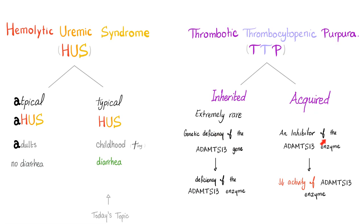In the acquired form, there is no deficiency of the enzyme itself, but there is an inhibitor — usually an IgG inhibitor — of the ADAMTS13 enzyme, leading to decreased activity, usually less than 10% of normal. By the way, ADAMTS13 stands for 'a disintegrin and metalloproteinase with thrombospondin type 1 motif, member 13.'